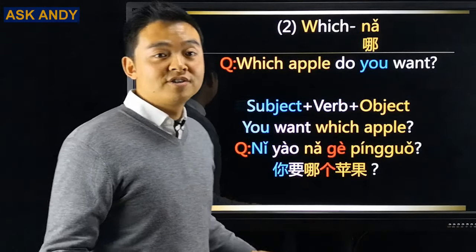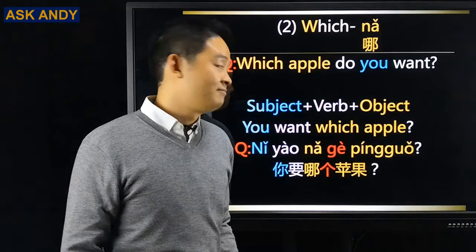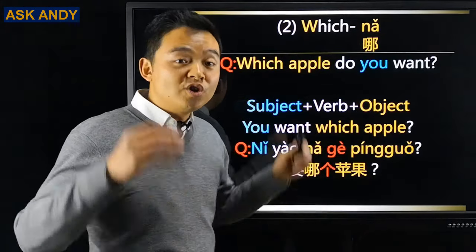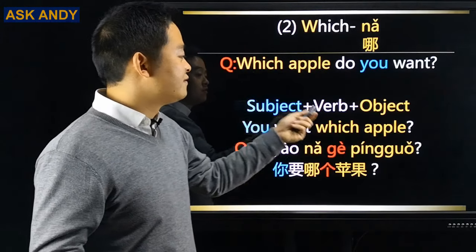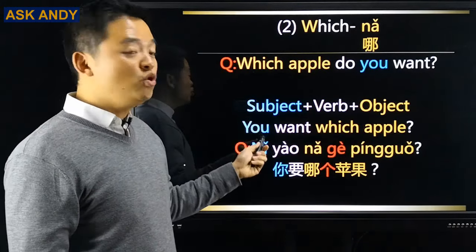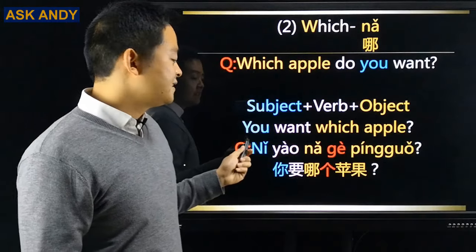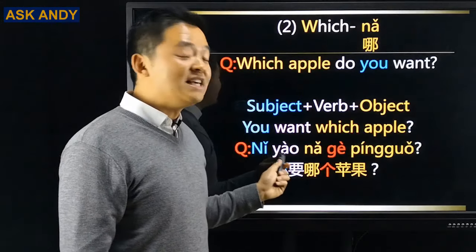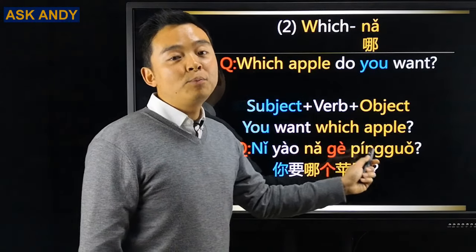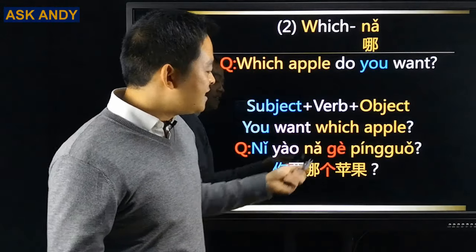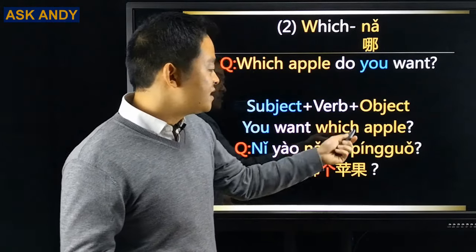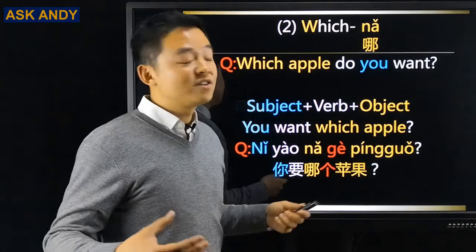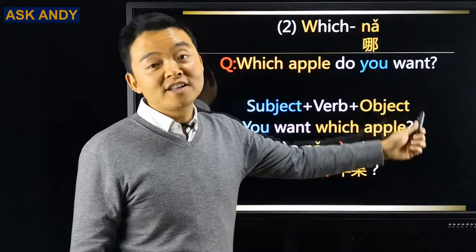Number two: which — 哪. A common question: 'Which apple do you want?' Rearrange to 'you want which apple?' That gives: 你要哪个苹果? I made 个 in red because it's a measure word for 苹果 — we don't have that in English. To learn more about measure words, check the video.